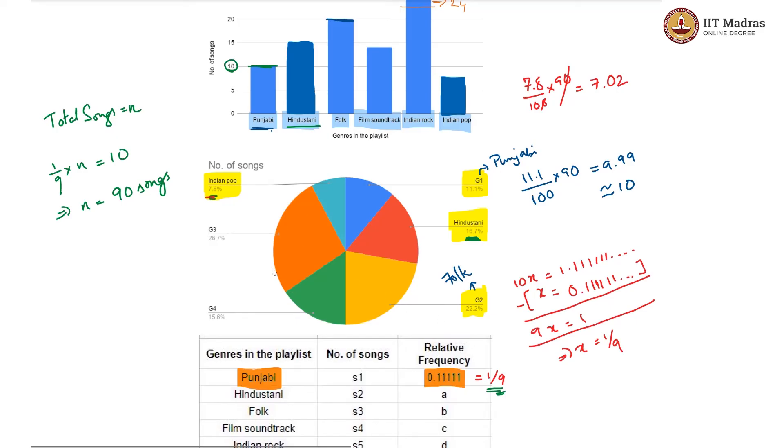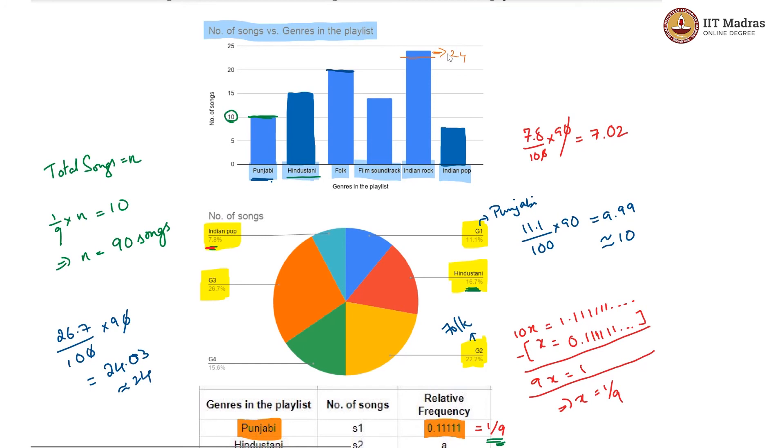And then look at G3, 26.7 percent. What is 26.7 percent of 90? So 26.7 by 100 into 90, 00 cancels off. We are getting 2.67 into 9. What would that be? This is essentially 24.03. So roughly 24 songs. And we have seen earlier that 24 songs is the number for our model genre, which is Indian rock. So G3 is certainly Indian rock.